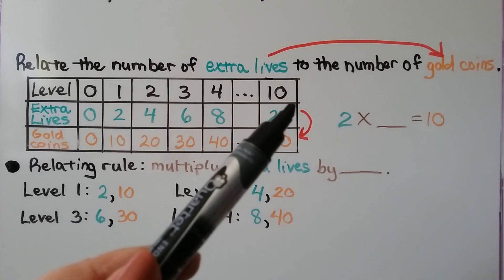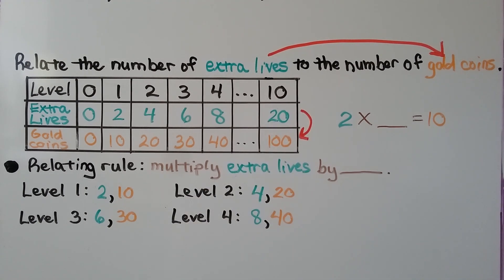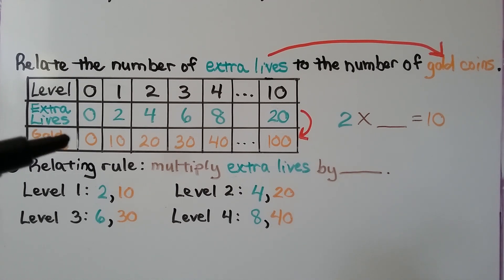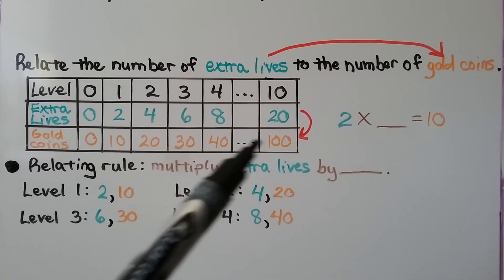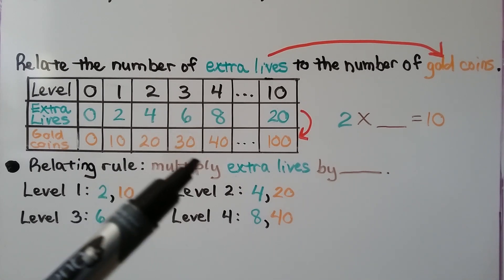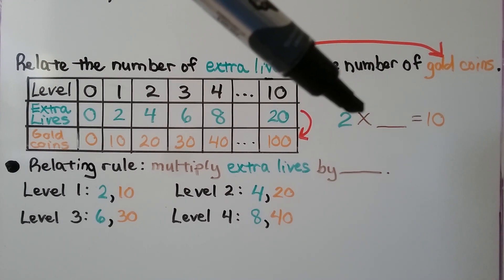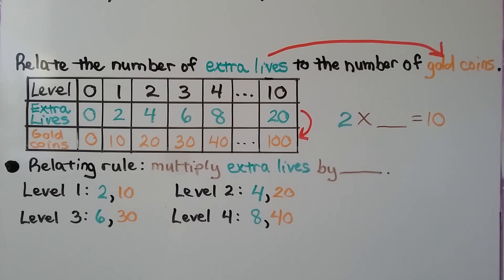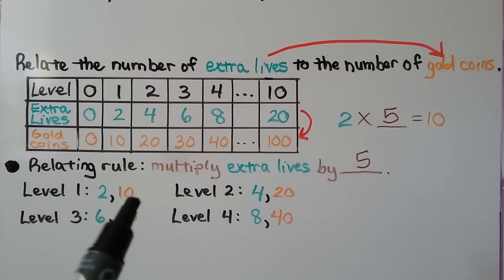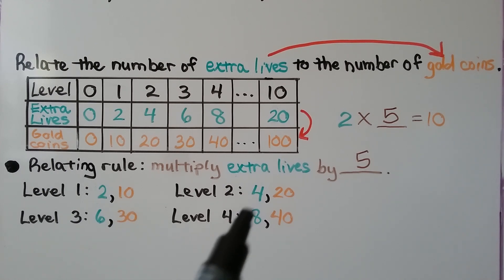If the arrow is going down toward 100, we relate the number of extra lives to the number of gold coins. Now we start with extra lives as our first number and multiply by some amount to equal the gold coins. The pairs go from 2 to 10, and 2 times 5 is 10; 4 times 5 is 20; 6 times 5 is 30; and 8 times 5 is 40. So the rule is multiply by 5.